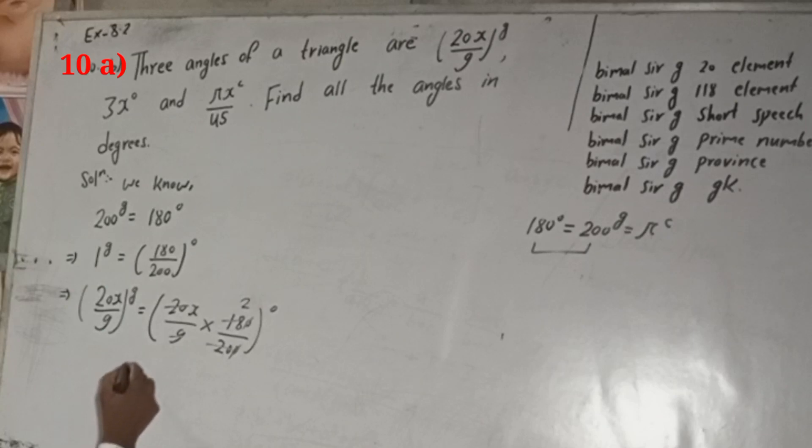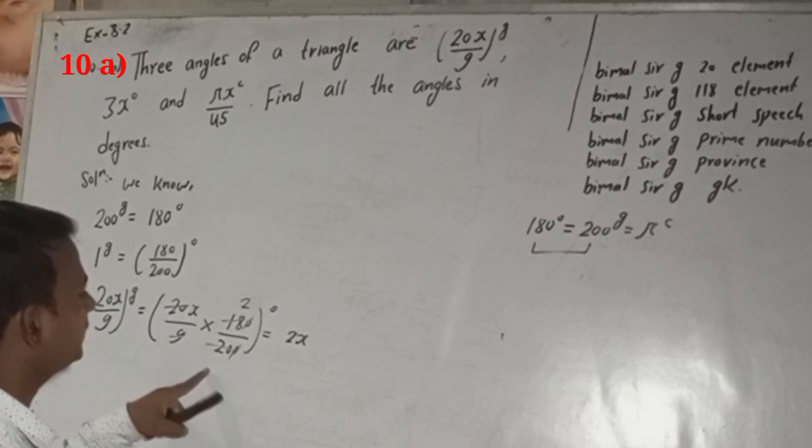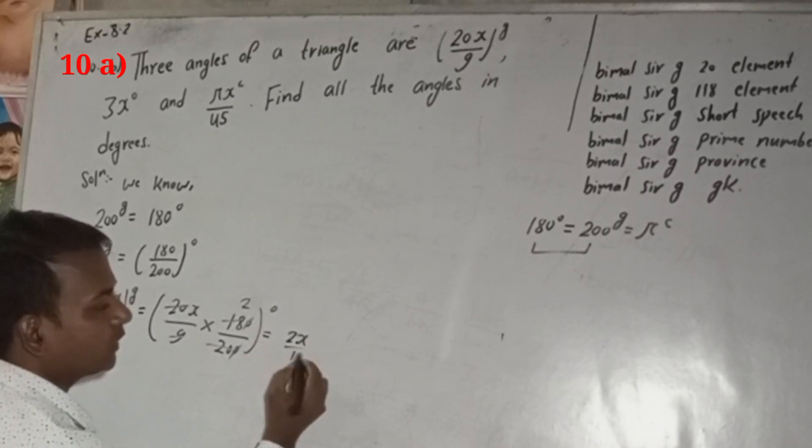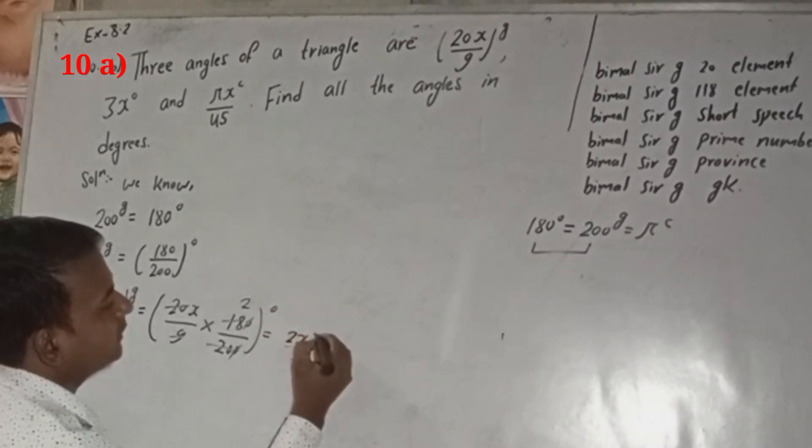So we got here, this is equal to 2x, 2x, and it doesn't matter, there is nothing. So we got here 1, so 1 means nothing, no need to write this one. 2x, and then degree.